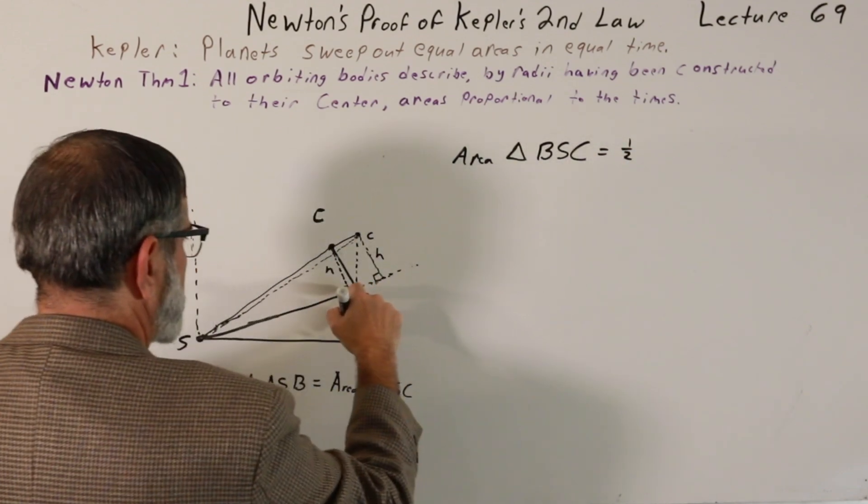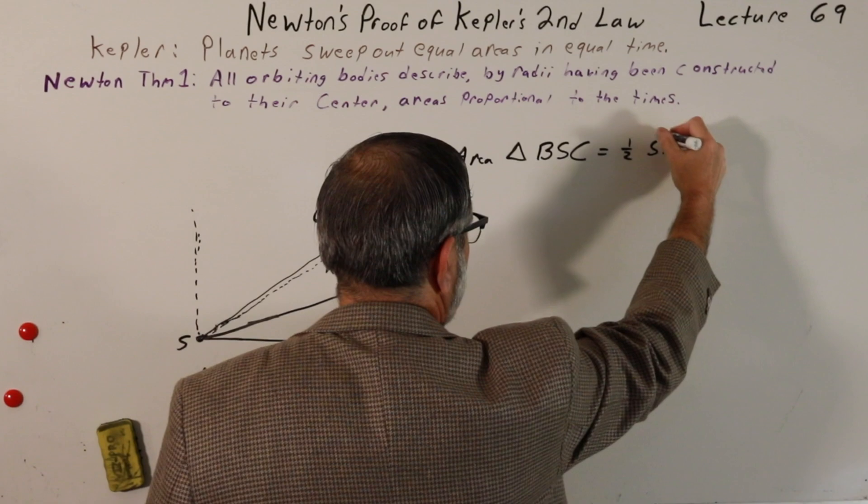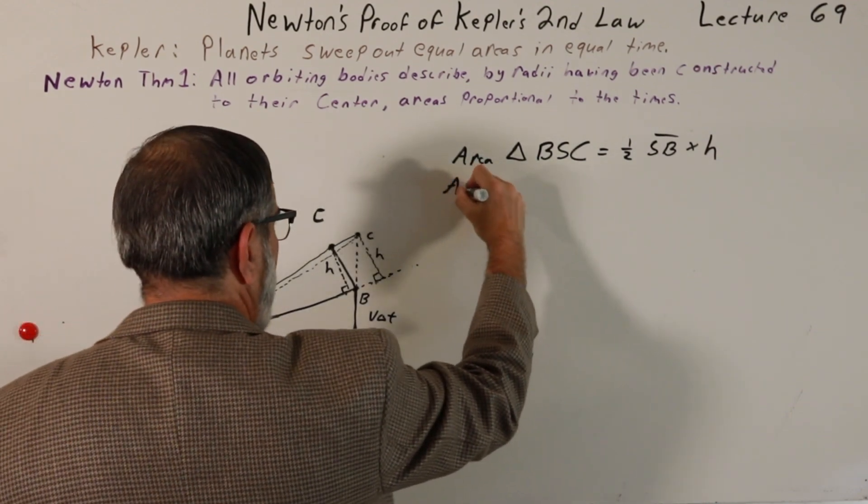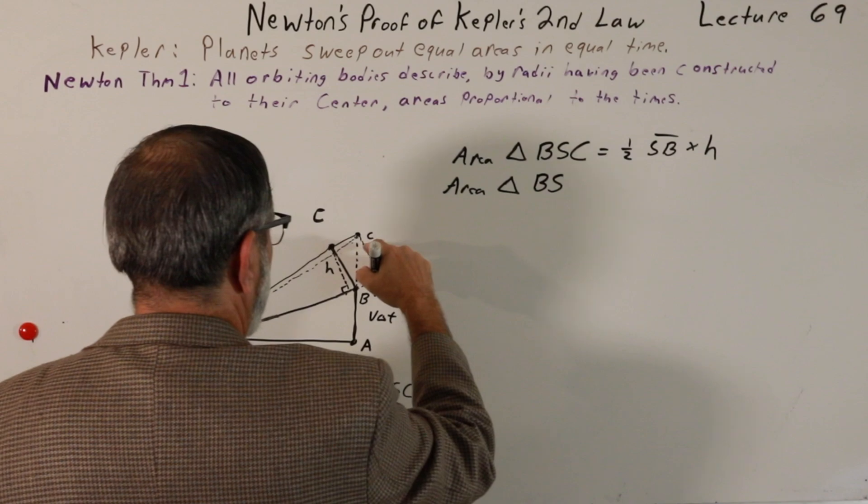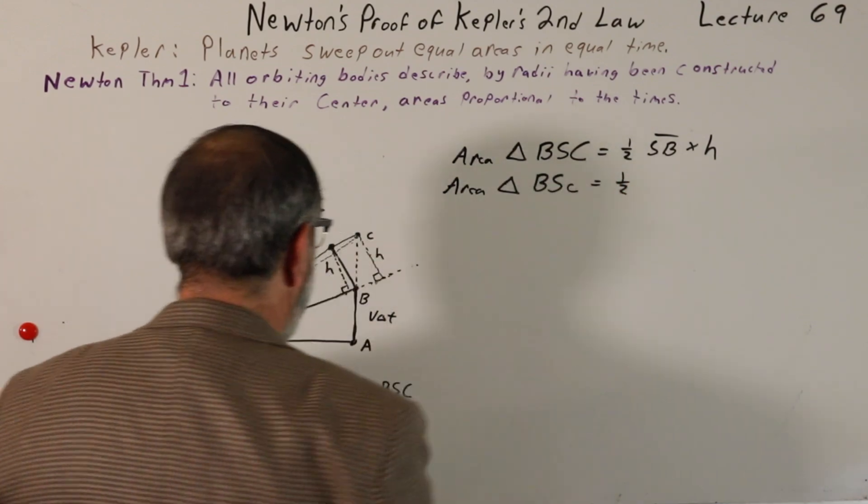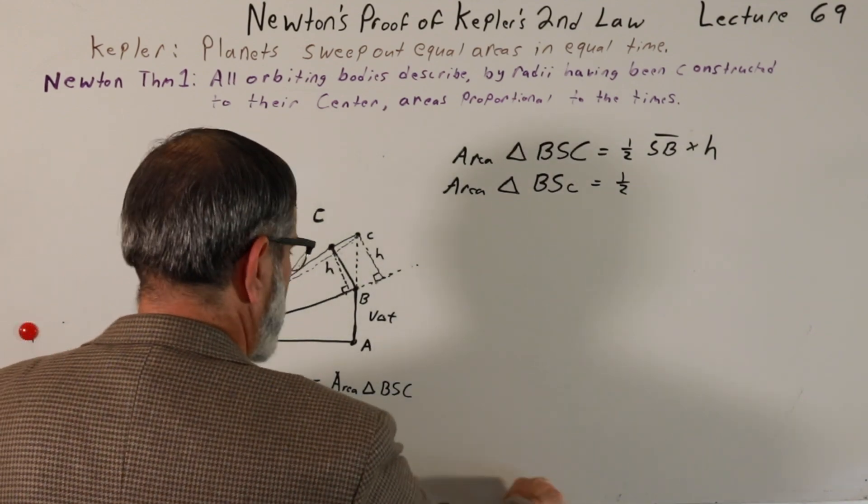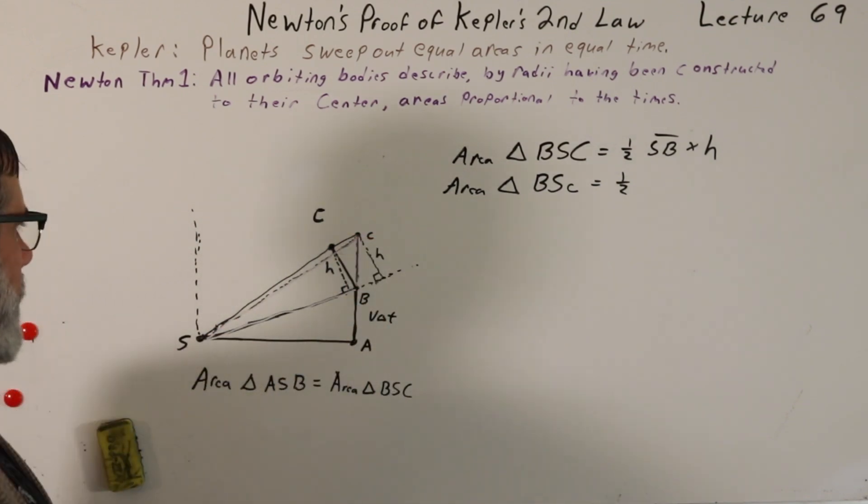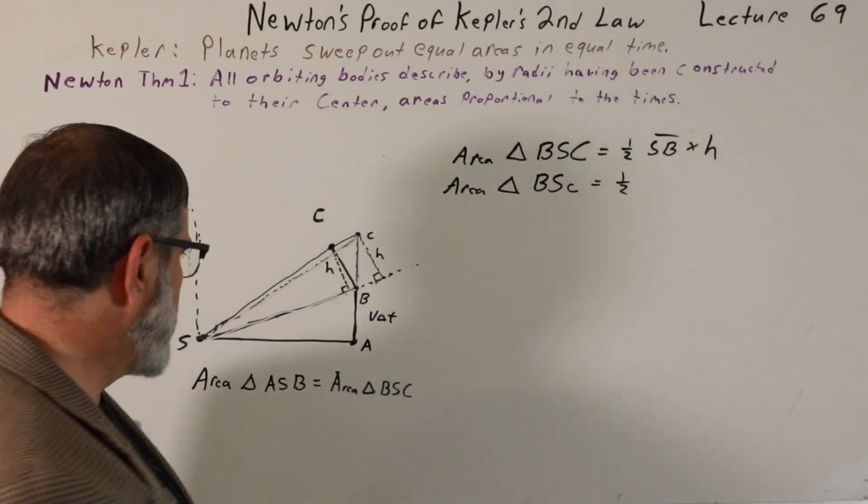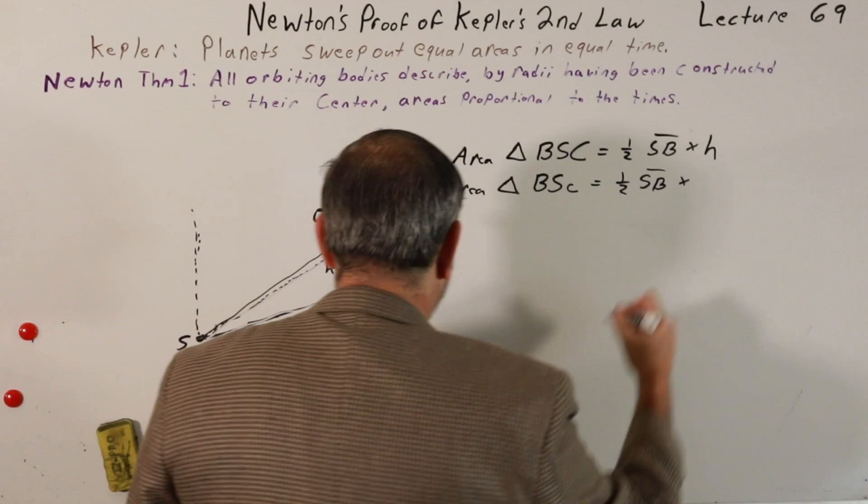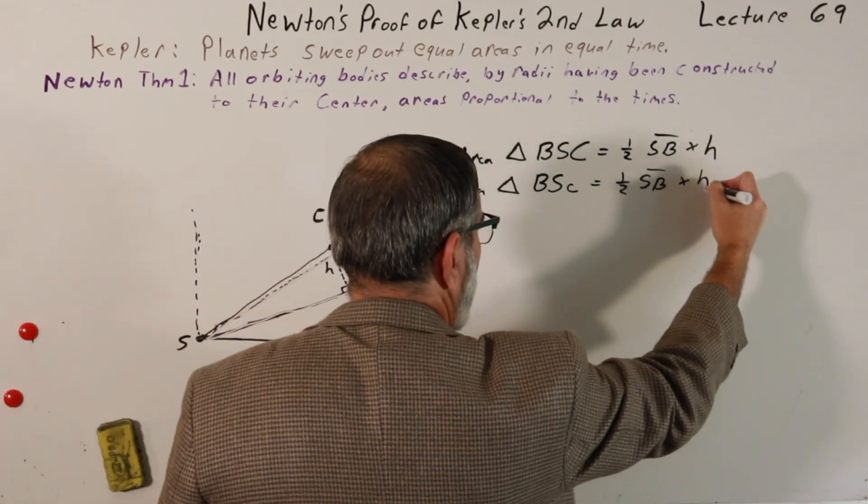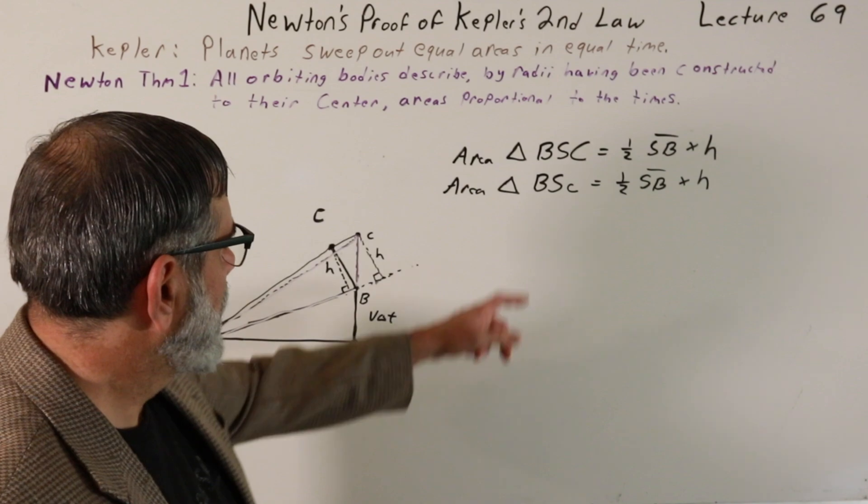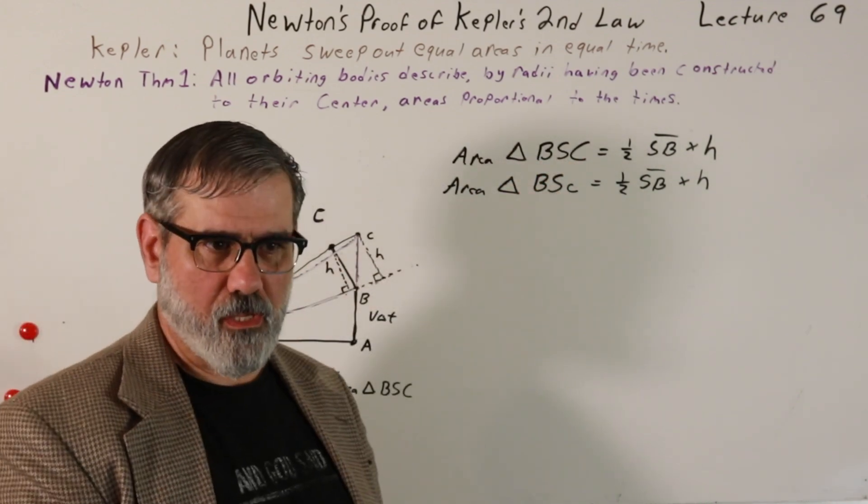But we can do the same thing from the point C. This distance from this line to the point c is the same as this distance from the point uppercase C to this line. So there's our right angle again. This is also H. So we can think of H as the altitude for these triangles. So what's the area of the triangle BS uppercase C? Well, it's one-half times the base, the base is just the distance SB times H. What is the area for the triangle BS lowercase c? Well, that's one-half. What's the base of that triangle? It's basically this triangle here. And so its base is also SB, and its height is this same distance H. So you see that these two are equal, so we have that the area of BS uppercase C is equal to the area of BS lowercase c.